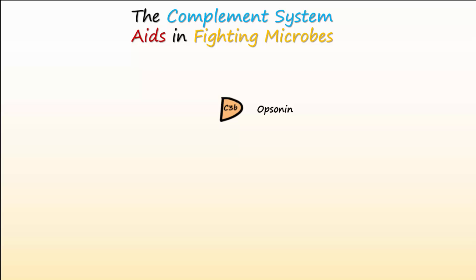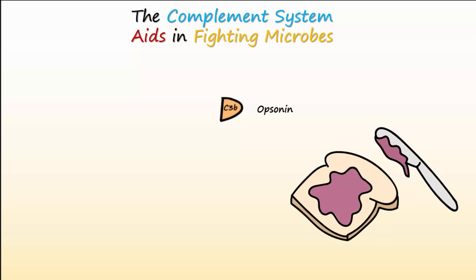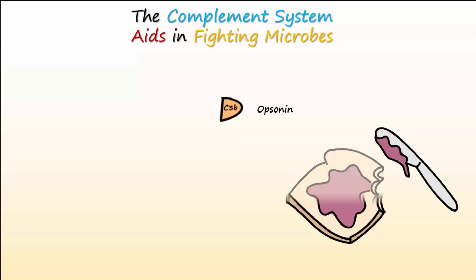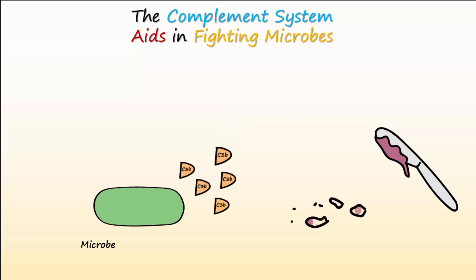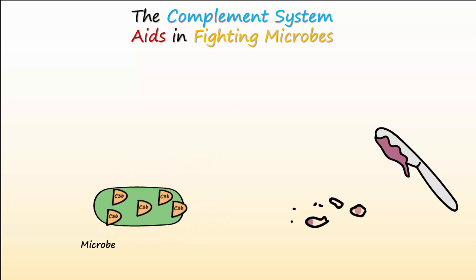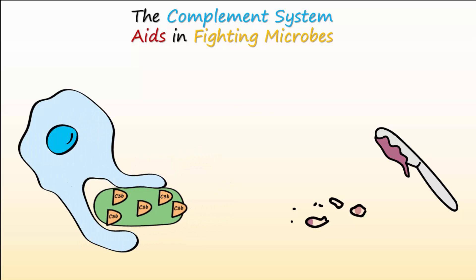C3B acts as an opsonin. This means it makes it easier for phagocytic cells to recognize bacteria or foreign material. You may compare the process of opsonization to putting jam or honey on toast — would you have a greater desire to eat the toast if it was coated with one of these tasty condiments? In the same way, macrophages and neutrophils will eat up a lot of bacteria when the bacteria are coated with the activated complement C3B.